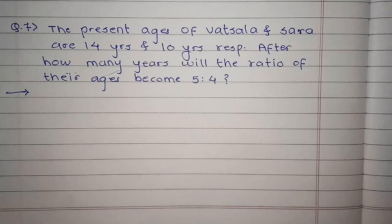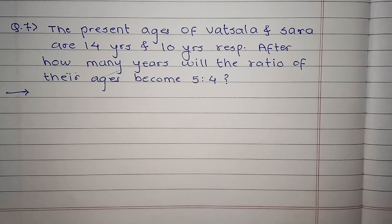तो Vassala and Sara के present ages हमें दिये हैं 14 years and 10 years respectively. हमें Question में बोला है कि कितने साल बाद उनके ages का ratio बनेगा 5 to 4?